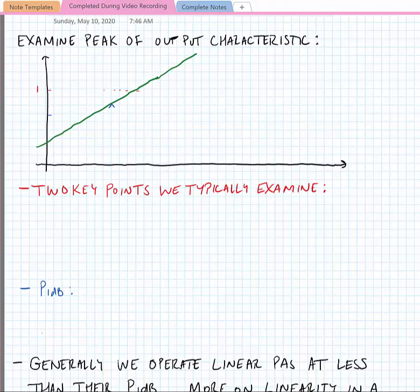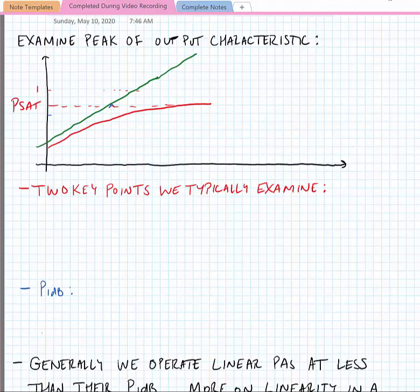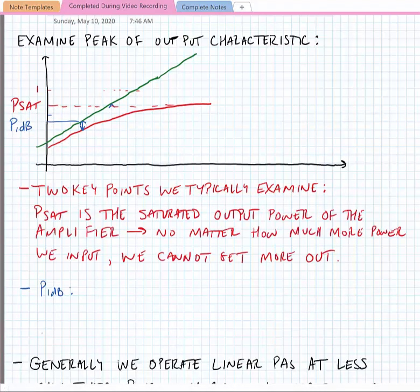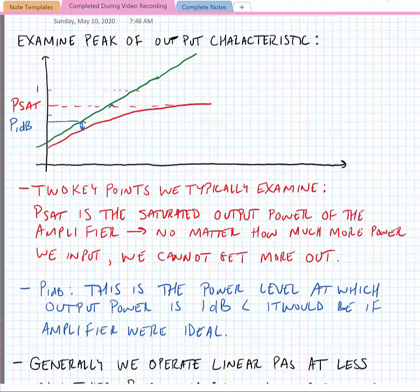Zooming in on the peak output of the characteristic: we have the ideal characteristic in green and the less-than-ideal characteristic in red, and we can see that the two are diverging. When the red characteristic reaches its maximum value, we call this the saturated output power, or P_SAT, of the amplifier. At a point lower than that — where the ideal curve varies from the measured or simulated curve by 1 dB — we call this the P1dB point of the amplifier. P_SAT is the level at which, as we increase the input power, we don't get any more output power out — the characteristic completely flattens out.